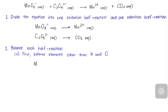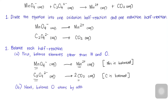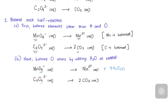For step two, we balance each half-reaction. First, we balance elements other than hydrogen and oxygen. For the reduction of permanganate ion to Mn2+, manganese is already balanced. For the oxidation half-reaction, carbon is not balanced, so we add a coefficient of two on the product side. Next, we balance oxygen by adding water. The permanganate half-reaction has four oxygens on the left and none on the right, so we add four water molecules on the right. For the oxalate half-reaction, both sides have equal numbers of oxygen, so it remains as is.